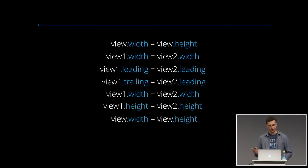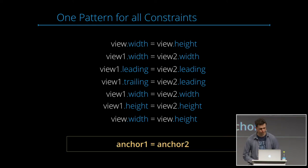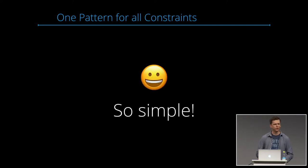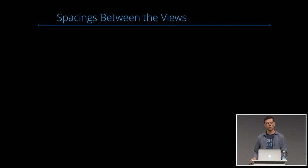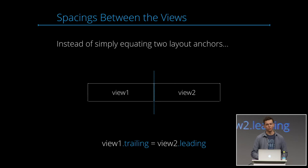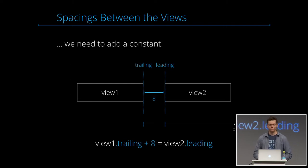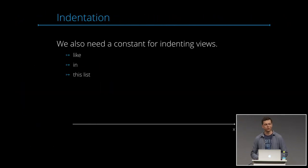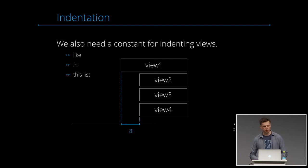Looking at all those equations, they all follow one simple pattern: anchor1 = anchor2. But what about spacings between views? If we want some spacing, instead of simply equating two layout anchors, we need to add a constant. For example: view1.trailing + 8 = view2.leading. Similarly, for indentation in a list, we also need a constant: view1.leading + 16 = view2.leading, for example.